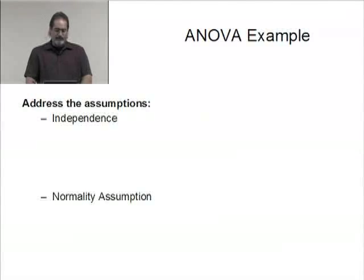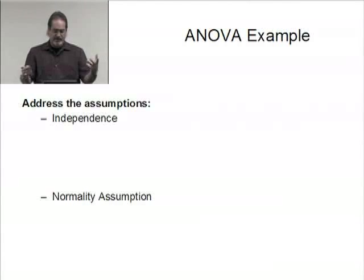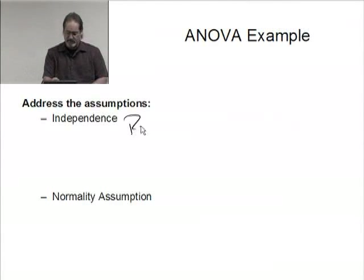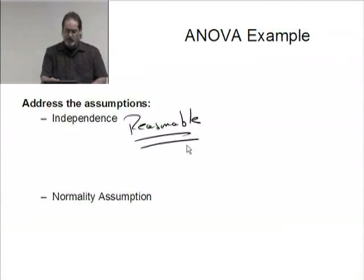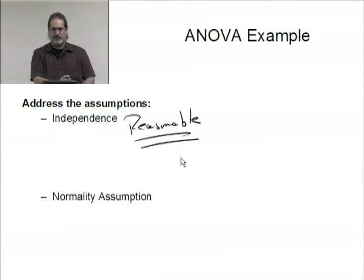Independence: are these groups independent? Yeah, 30 rats are broken up into three groups, each group gets a different diet or different type of food. So if one rat in group one gains weight, there's no connection between a rat in group two or group three, so it's reasonably independent. This is reasonable. I would expect my students to actually write out why, just a couple sentences briefly explain why.